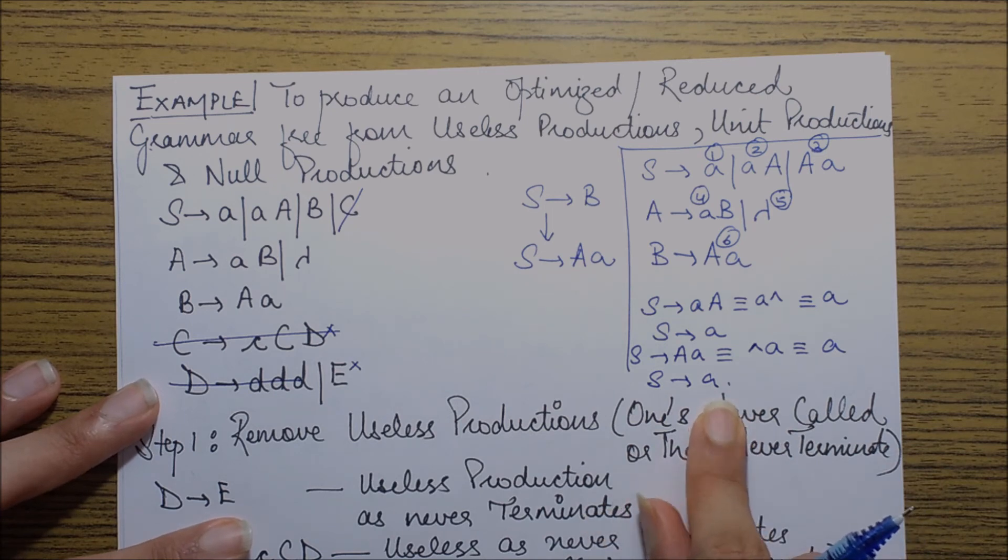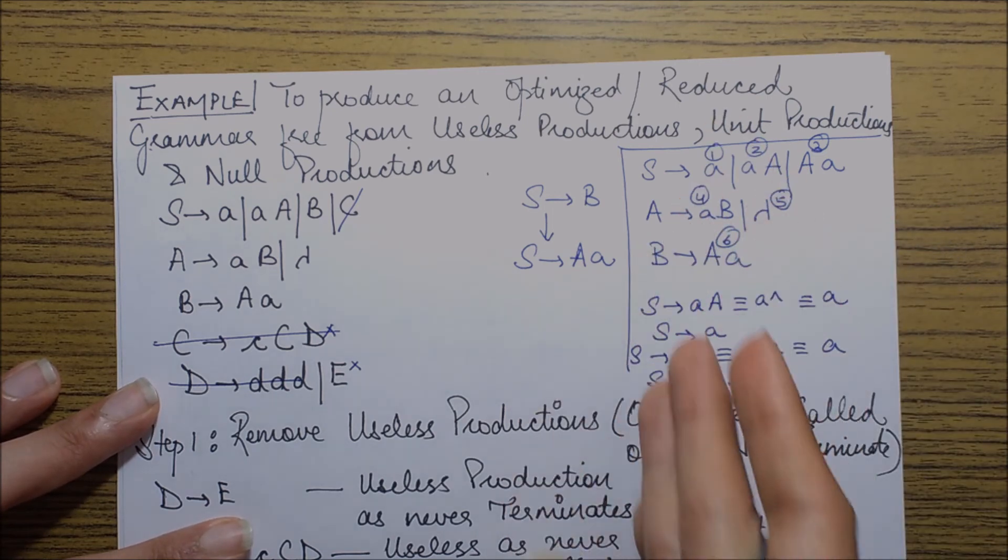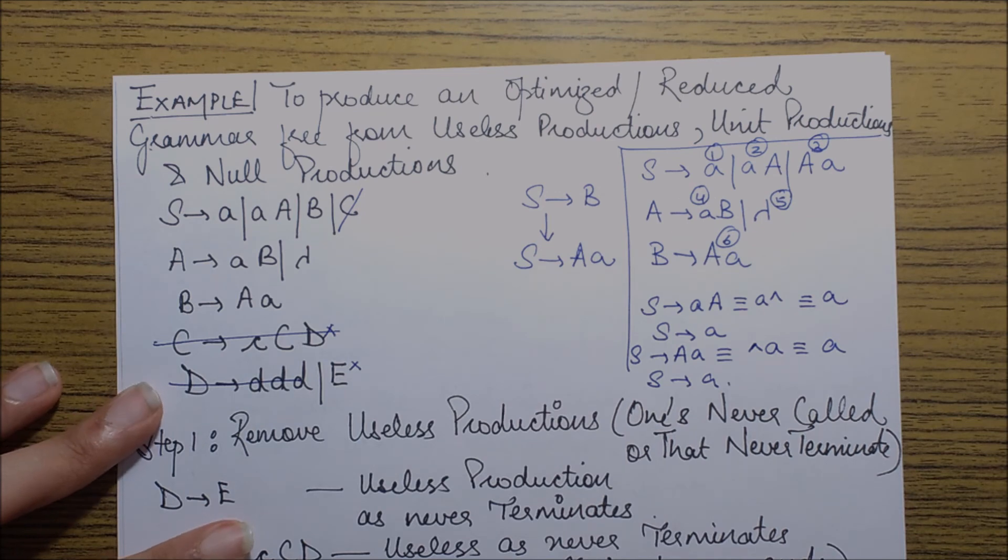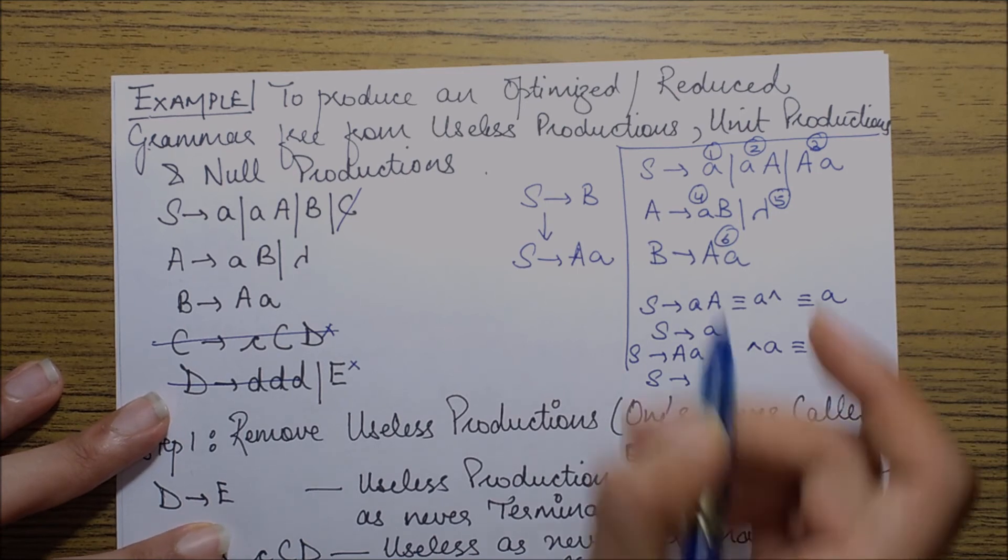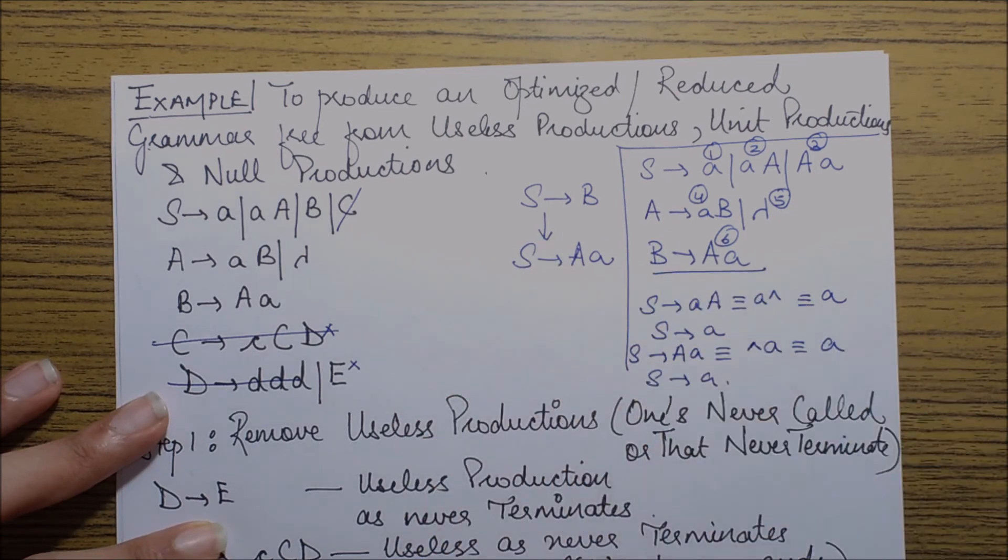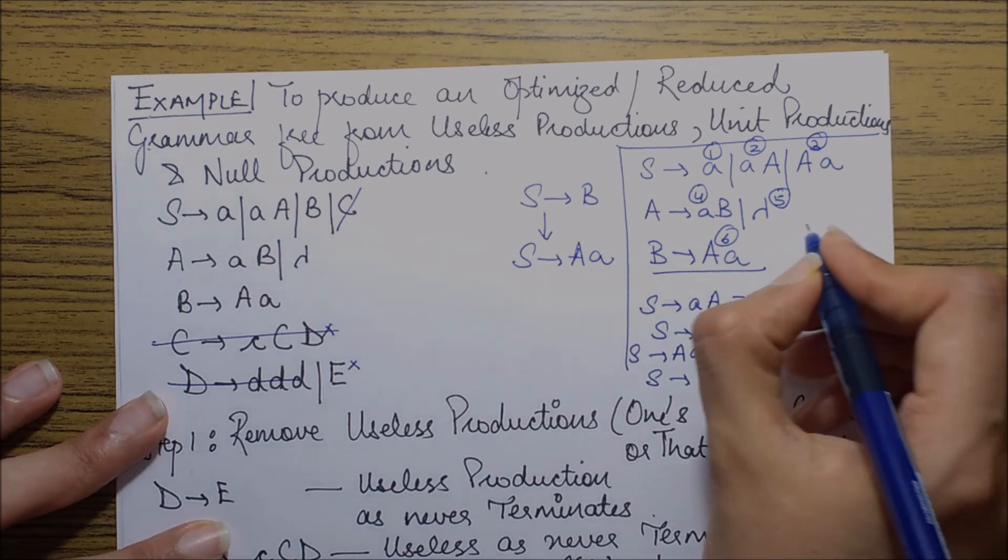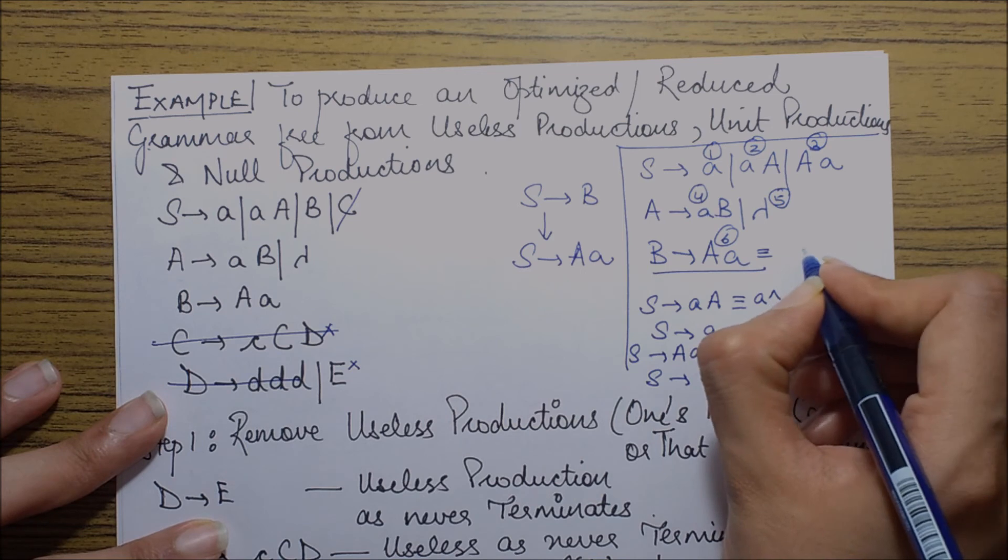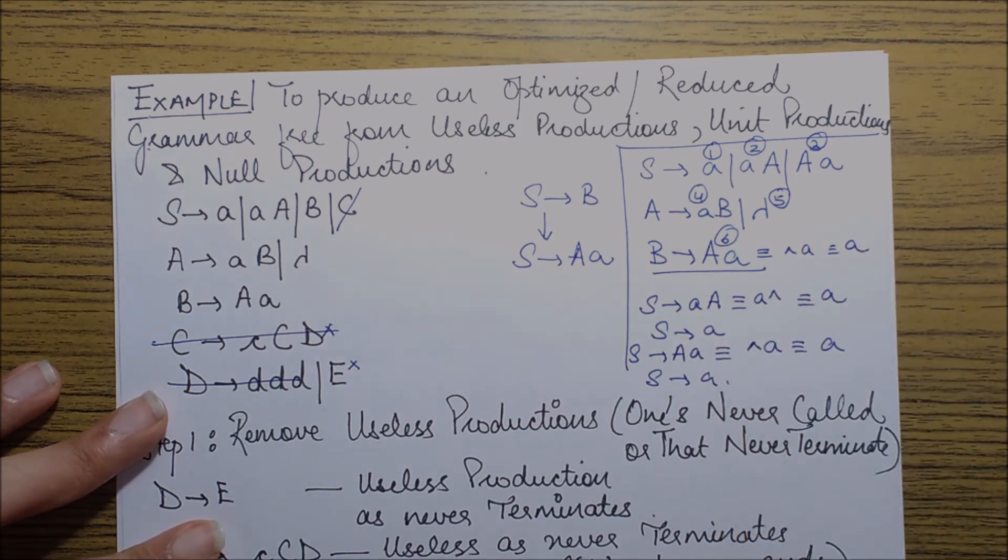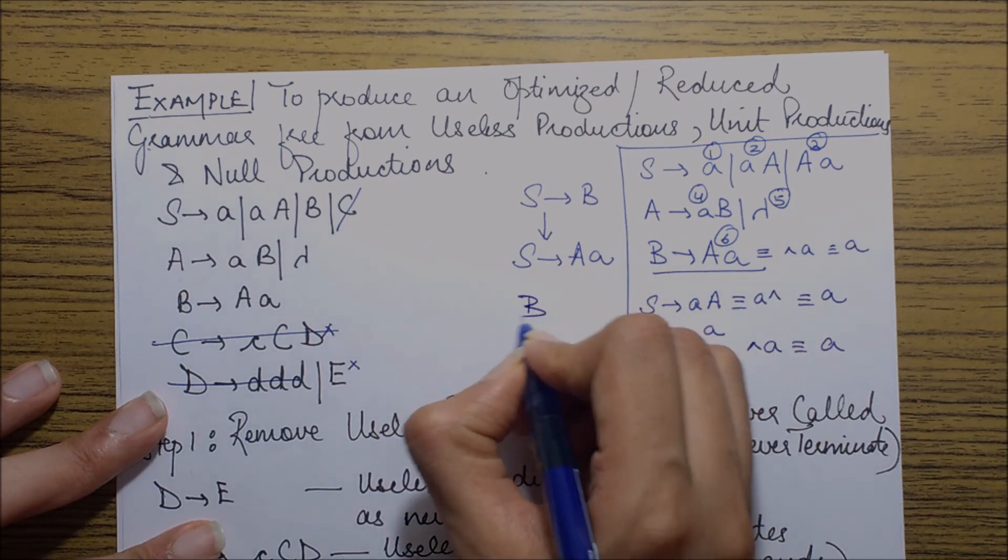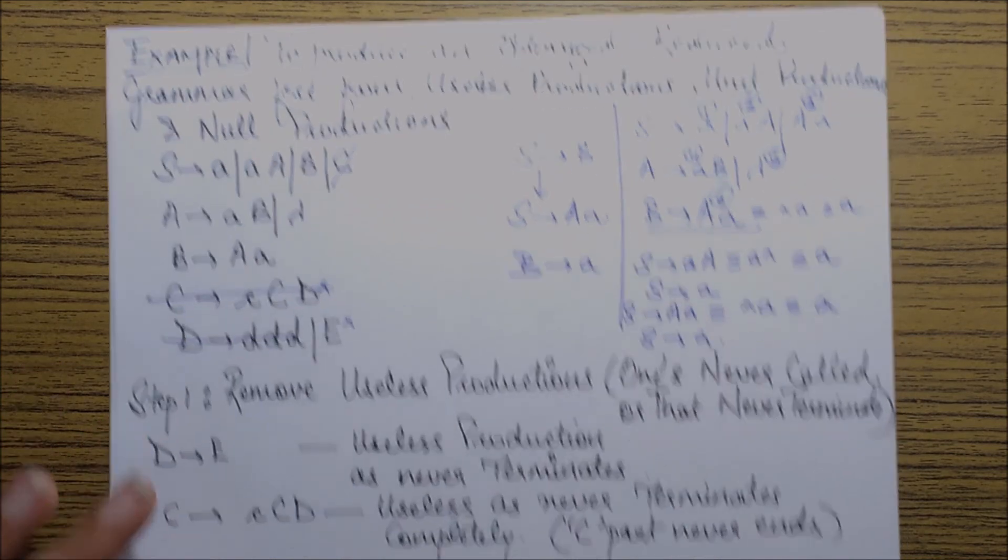But S goes to A is already present in my set of productions, so I don't need to perform this substitution and therefore I will search for the other possibility present. So we know that the sixth production also has capital A present on its right hand side and if I substitute null over here, I would get null A which equals to A. So the new production that results from here is B goes to small a. So finally, the reduced grammar after the set of substitutions or after the removal of null productions is...